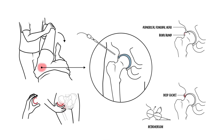In summary, femoral acetabular impingement syndrome is an important and increasingly recognised cause of hip pain in young adults. Early identification and management are key to preserving joint health and preventing the progression to osteoarthritis.